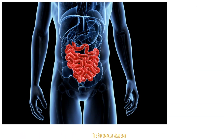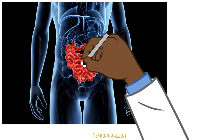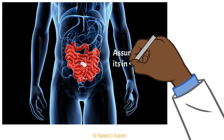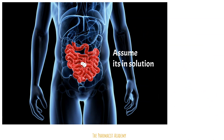So now you have the medication in the small intestine, which is where the majority of absorption occurs. Assume it's in solution. At this point, it's all about the medication being absorbed into the hepatic vein and then going to the liver.